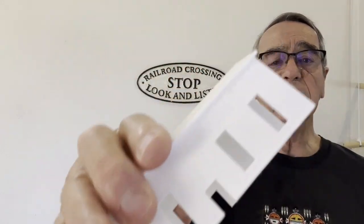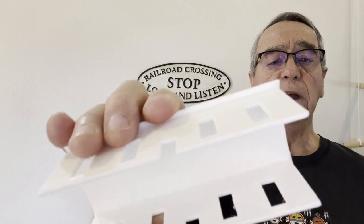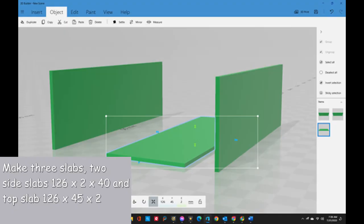So the first part of the model that I will do is the bulk of the assembly, the body, and the steel roof, and the roof overhang part. The 3D Builder modeling program allows you to create parts, adjust their size, their rotation, and their position.